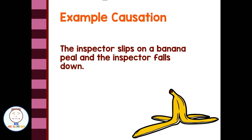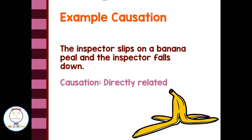An example of causation: the inspector slips on a banana peel and the inspector falls. That's causation — they're directly related.